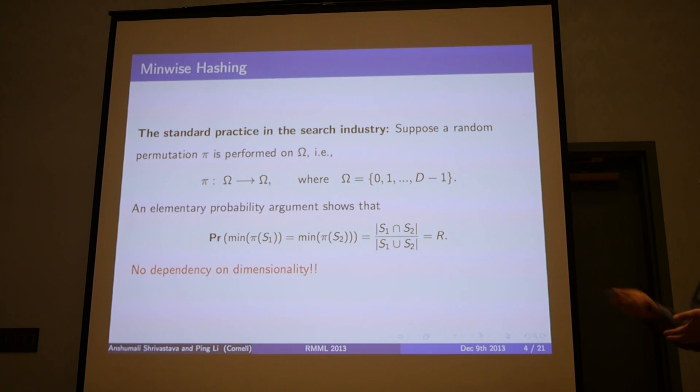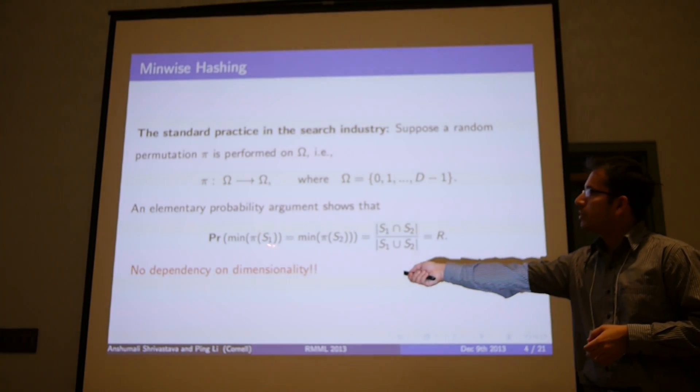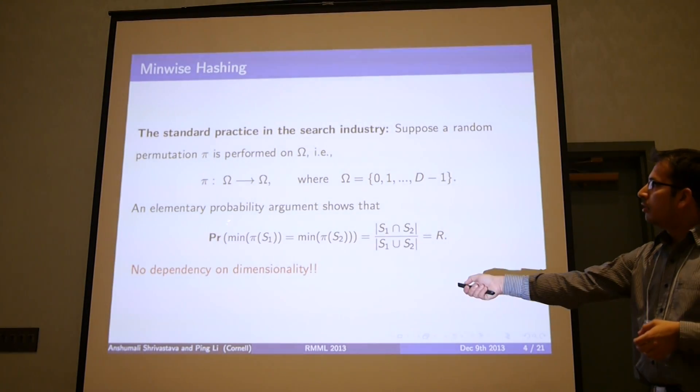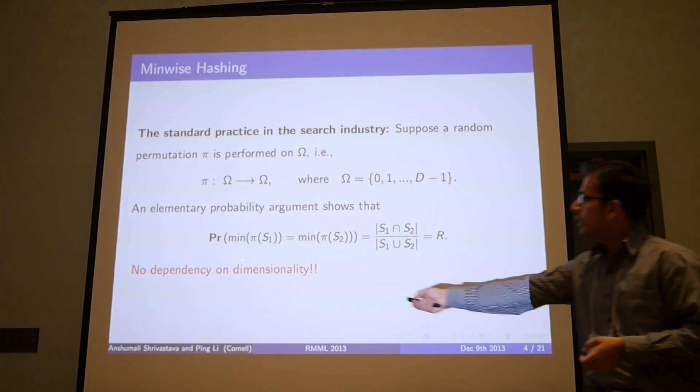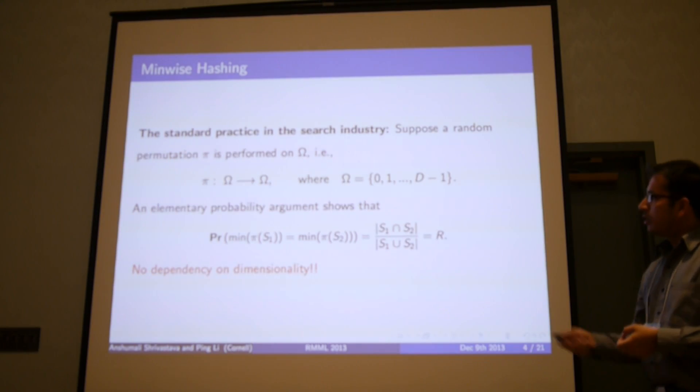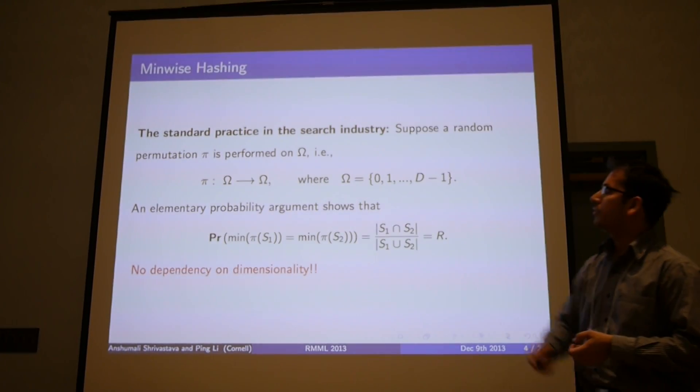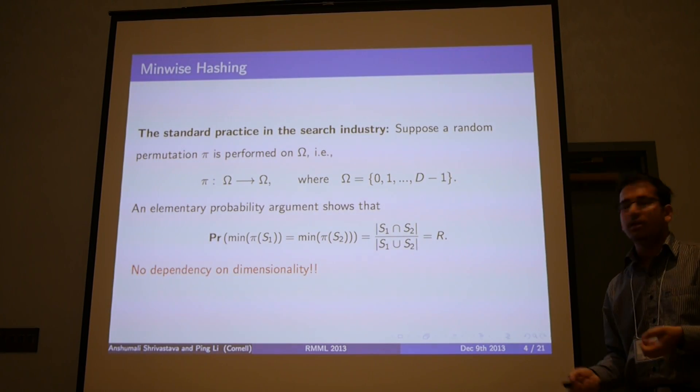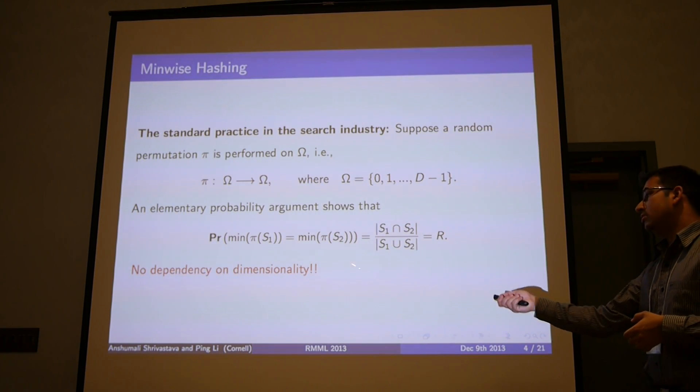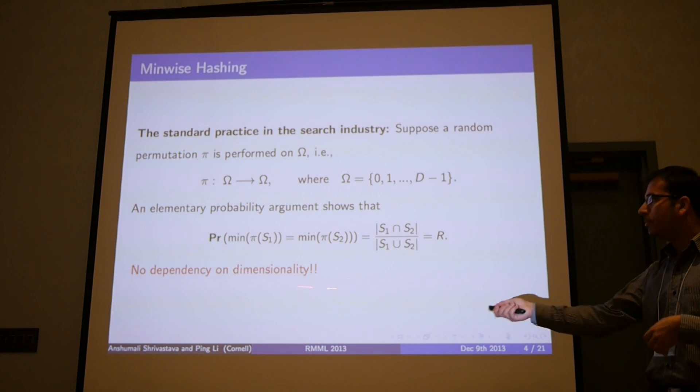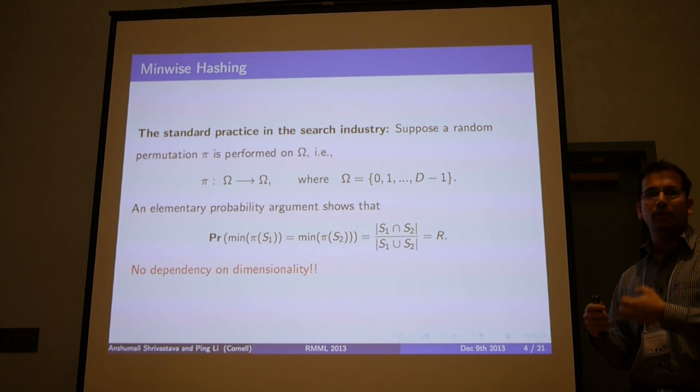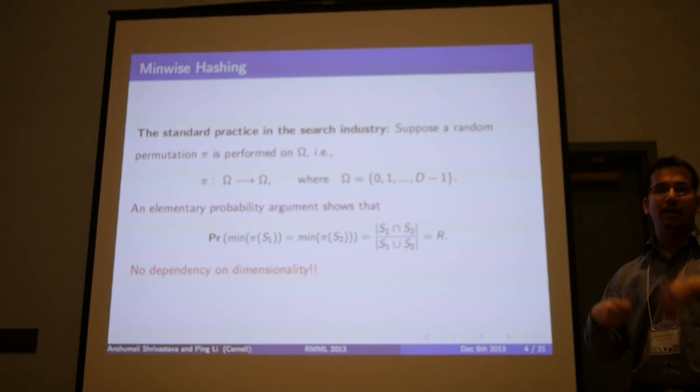Minwise hashing is a standard hashing technique widely adopted in practice. The idea is we use a random permutation π. Suppose a permutation π is performed on Ω, where Ω = {0,1,...,D-1}. If we are given two sets S1 and S2, we apply that permutation to the set S, and then look at whatever is the minimum element after this permutation. An elementary probability argument shows that the probability under the randomization of the permutation that these two minimum values agree for two different sets is exactly equal to the resemblance similarity between them. Note that this does not depend on the dimensionality of the data.